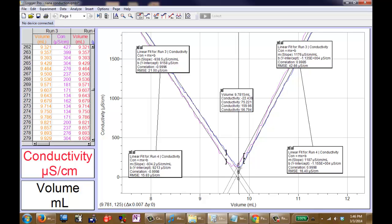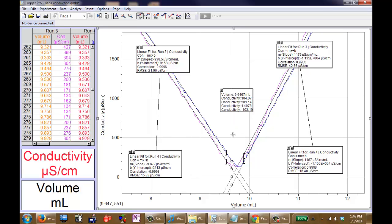For the second run we had a point of equivalence at 9.793 milliliters. This is the way that the points of equivalence are determined using the conductometric information.